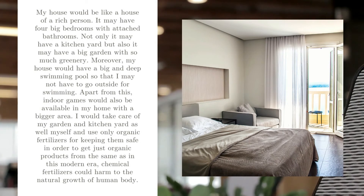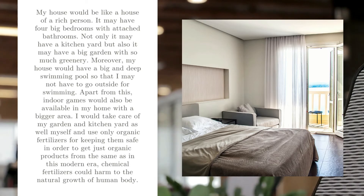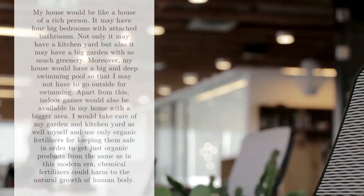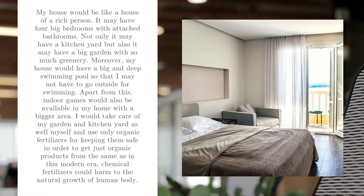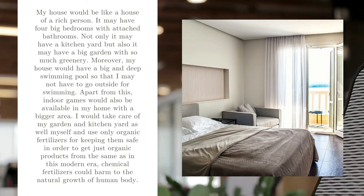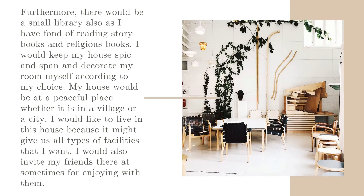Moreover, my house would have a big and deep swimming pool so that I may not have to go outside for swimming. Indoor games would also be available in my home with a bigger area. I would take care of my garden and kitchen yard myself, using only organic fertilizers, since chemical fertilizers could harm the natural growth of the human body. Furthermore, there would be a small library, as I am fond of reading storybooks and religious books.